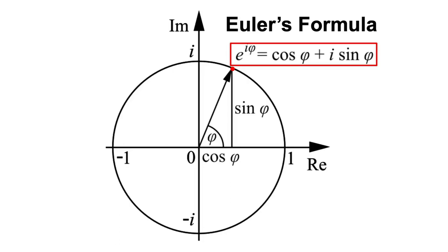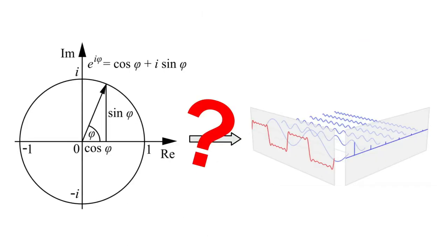When I first found out these things, they simply blew my mind, because concepts that seemed so alien to each other ended up being really connected by an equation as simple as this one. That's all nice and beautiful, but maybe now you are wondering how this is connected to the Fourier transform. Well, that will be the focus of the next part of this video, where we will connect the Euler formula to frequencies.